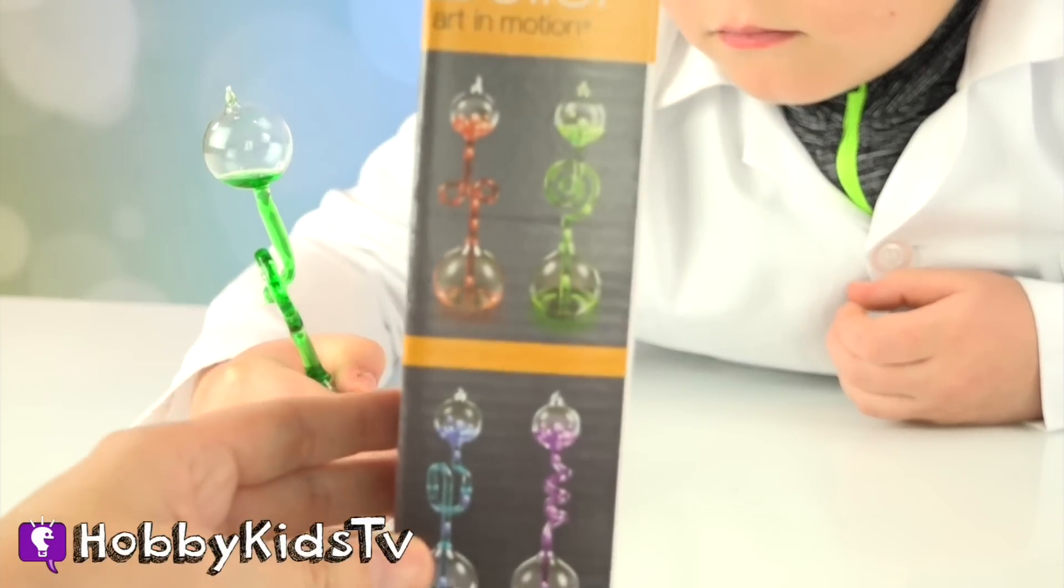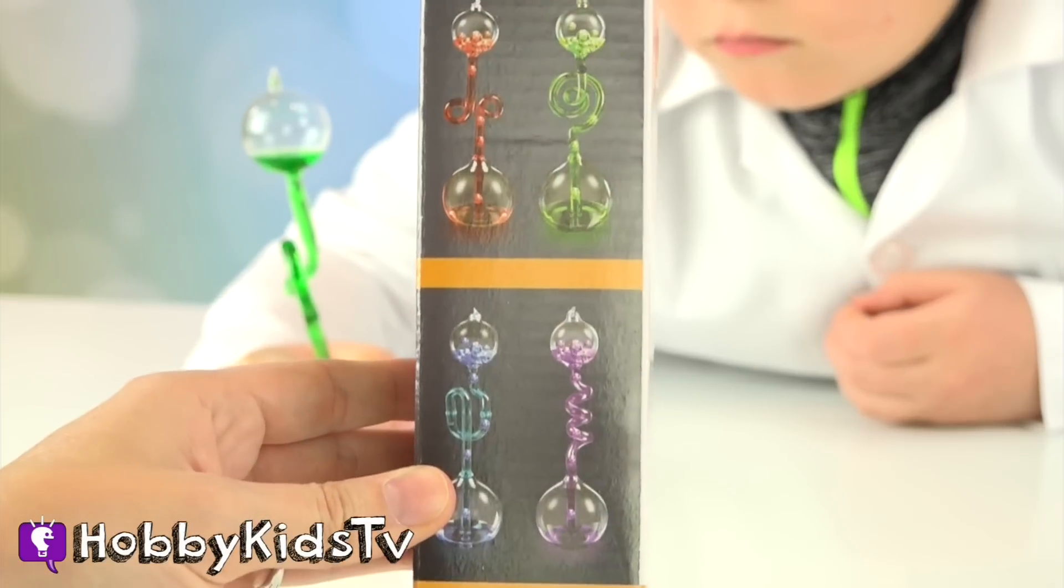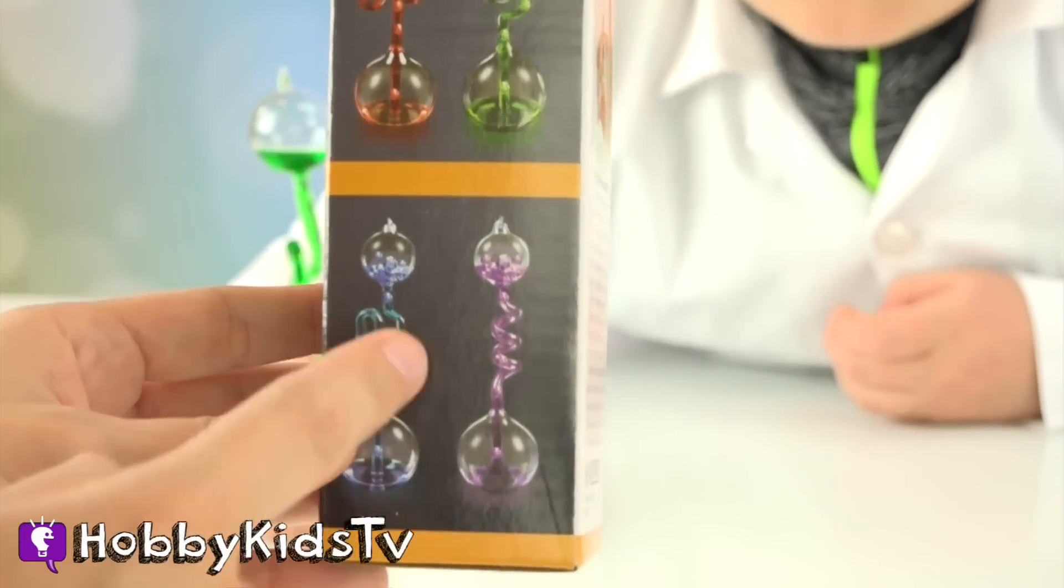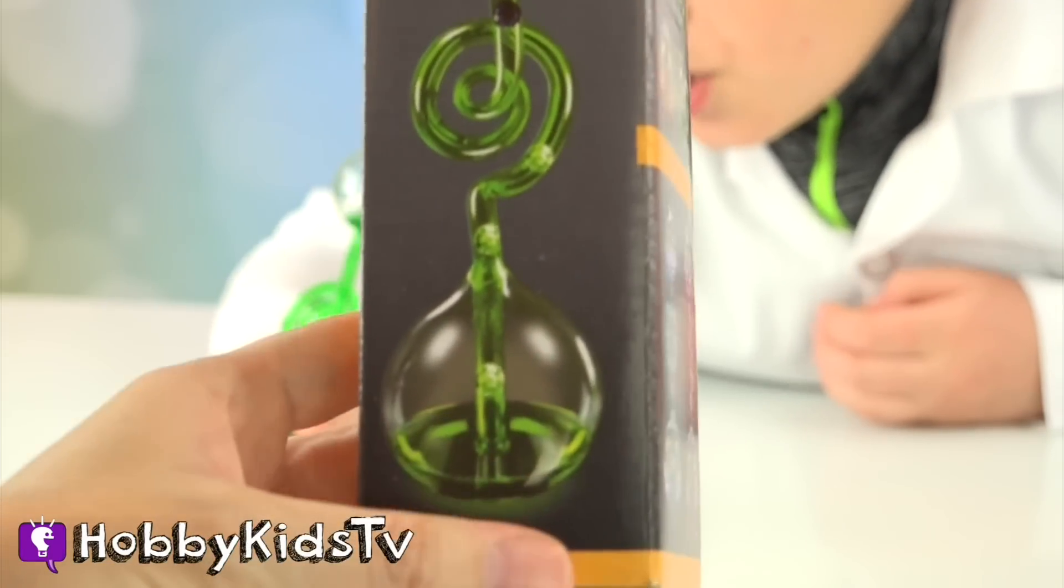These things are awesome. They come in different colors too: red, green, blue, and purple. And they have different shapes on them too, like the spiral colored in this one.